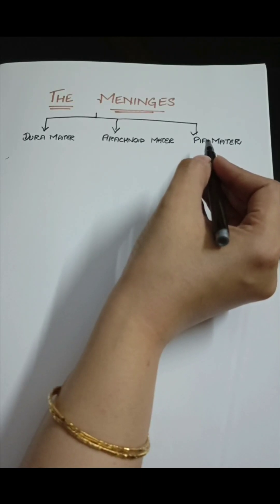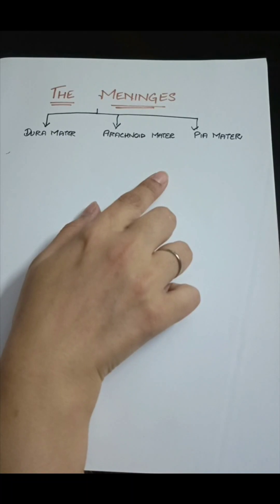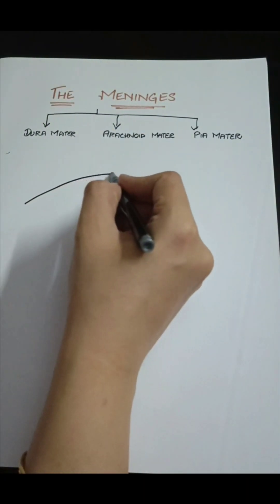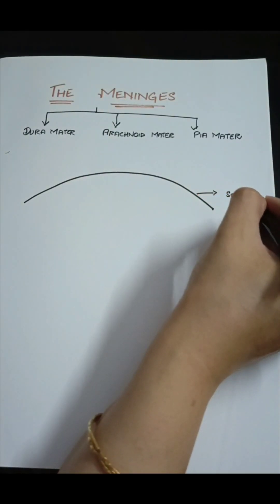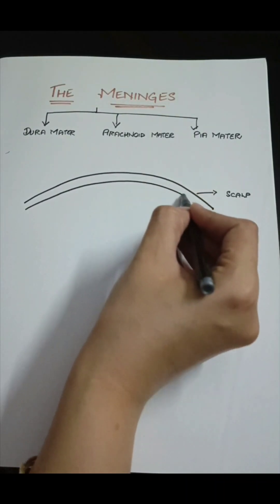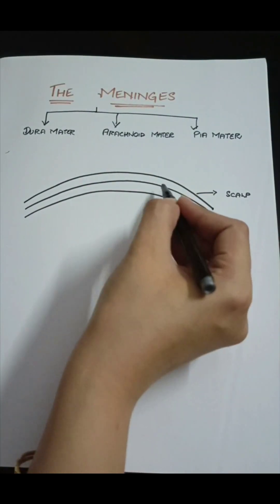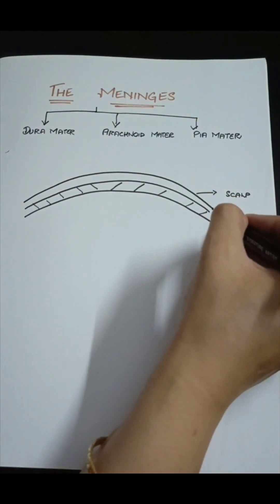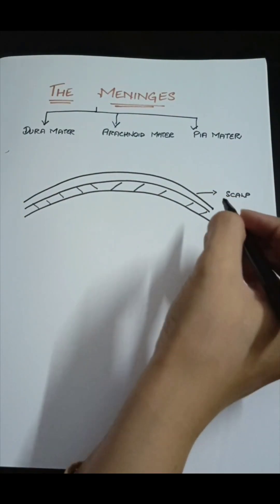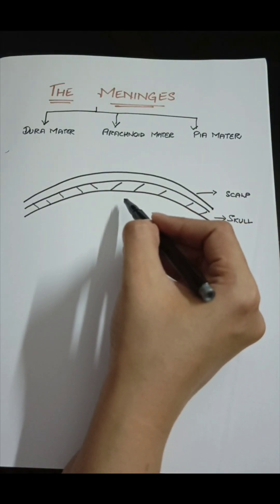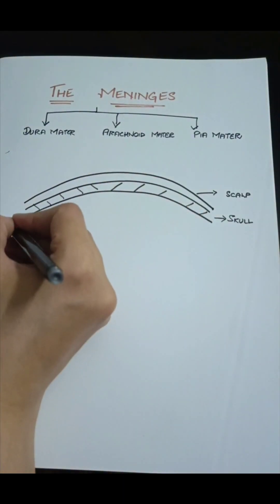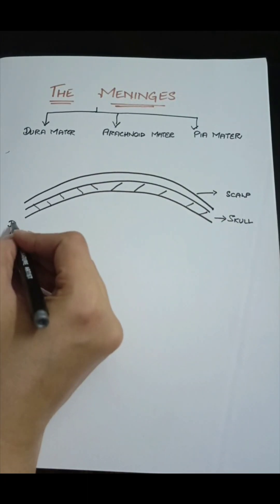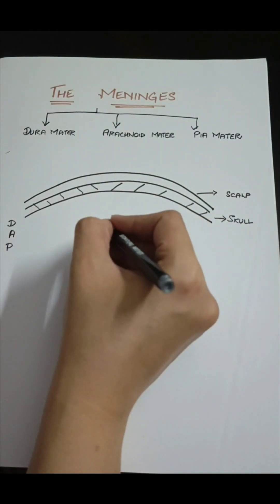Let's have a look at the three layers of the meninges and their arrangement. If we imagine the coronal section of the brain, the outermost layer is the scalp. Just deep to the scalp we have the skull bones. Beneath the skull bone, before we encounter the cerebral hemispheres, we notice three membranous structures which closely invest the brain in the arrangement of dura, arachnoid, and pia — these three layers form the meninges of the brain.